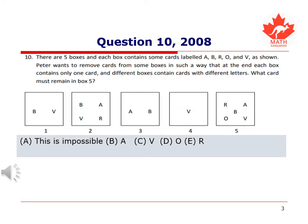Let's start with question 10 from the 2008 Canada Math Kangaroo Contest. There are five boxes, pictured below, and each box contains some cards labeled A, B, R, O, and V. We just put the letters themselves, but imagine the letters are the cards.